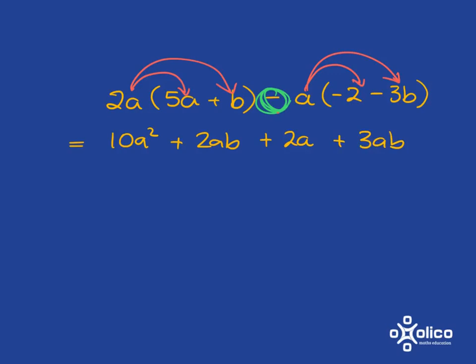Now I just have to sort this out. When doing addition and subtraction in algebra, I need to look for like terms. I start with 10a squared — does it have a friend? No. Then I look at 2ab — does it have a friend? Absolutely: 3ab is a like term. And 2a has nothing to go with. So: 10a squared stays by itself, 2ab plus 3ab gives me 5ab, and then I've just got the 2a.